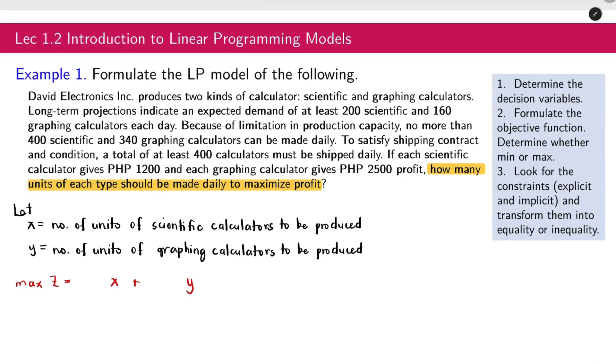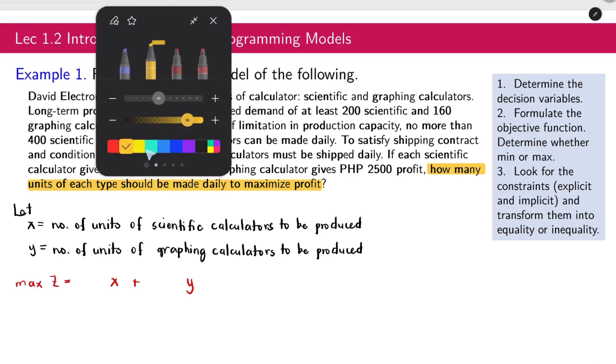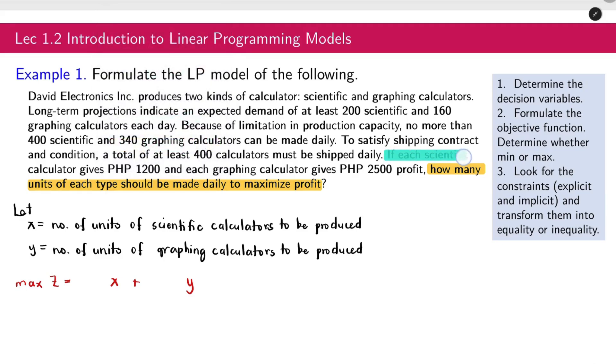Where x is the number of units and y is the number of units of scientific and graphing, respectively. Now, what will be the coefficients of x and y? Let's look at the problem. In particular, this line: if each scientific calculator gives this profit. The scientific is 1,200, and then the graphing is 2,500. This is our objective function.